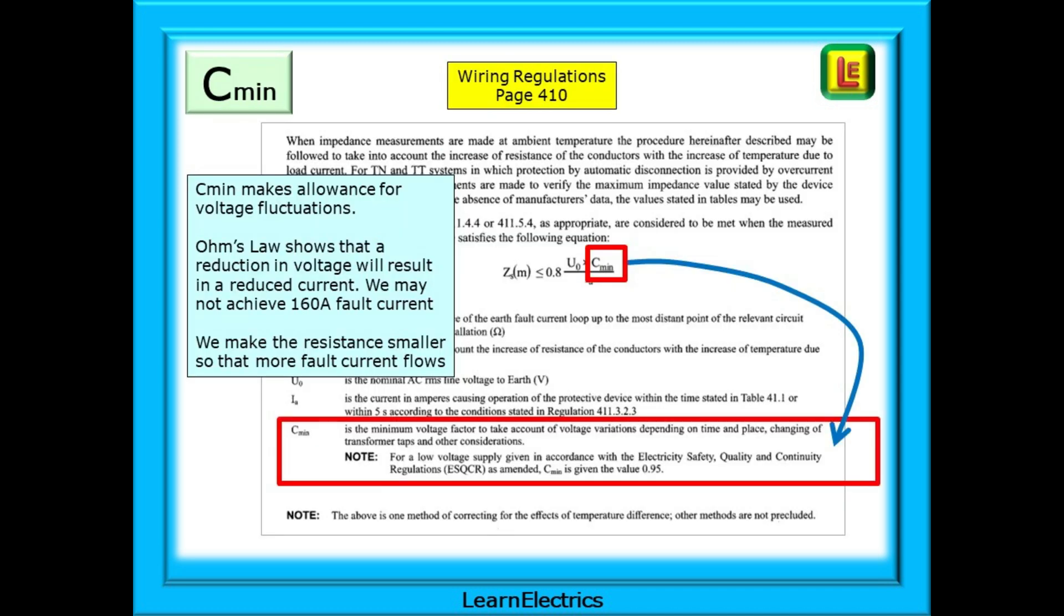So how does C-min work? On page 410 of the Brown Wiring Regs book is a formula that makes reference to C-min. And below that is a definition of C-min and instructions to use a factor of 0.95. C-min makes allowance for voltage fluctuations.